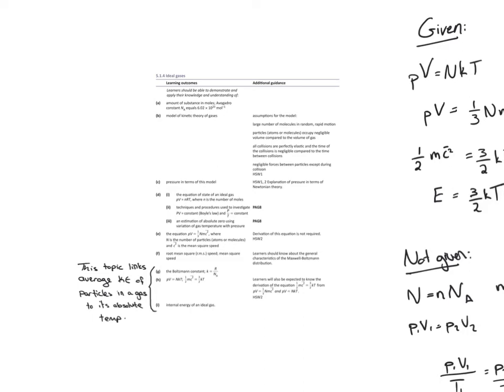Hi everyone. Today we're going to finish chapter 15, ideal gases. We're going to have a look at the last three learning outcomes. This whole topic was designed for ideal gases — we looked at how pressure, volume, and temperature, the macroscopic properties, could be linked to microscopic properties. With this last topic we're going to look at today, we're going to link the average kinetic energy of particles in a gas to its absolute temperature.